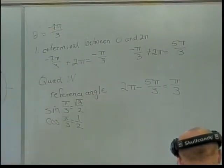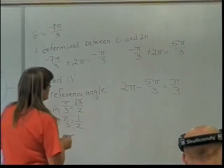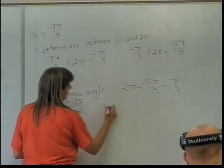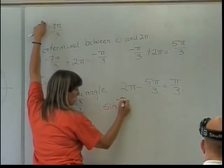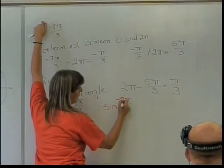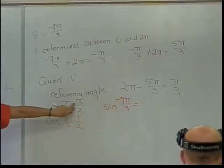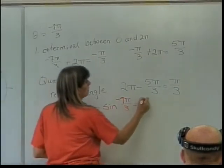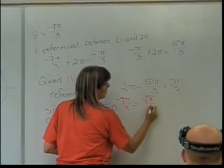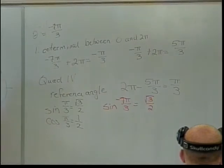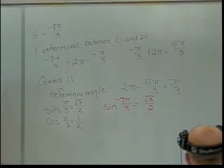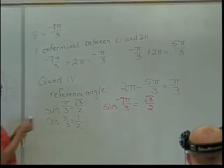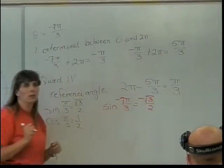Let's go to my actual angle. What is the sine of my original angle, negative 7 pi over 3? Well, it's going to be related to the square root of 3 over 2. Is it going to be positive or negative? And how do I know? Because I'm in quadrant 4. Your sine is going to be negative down there.